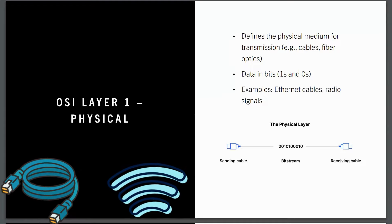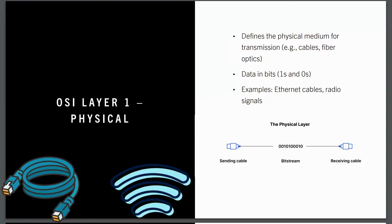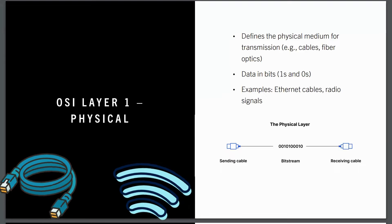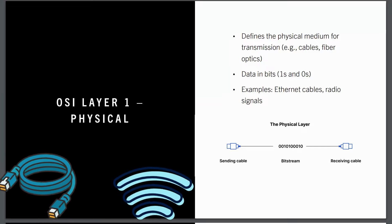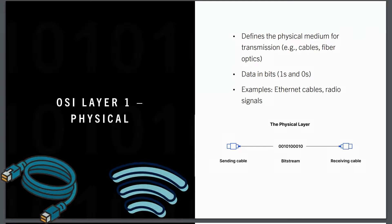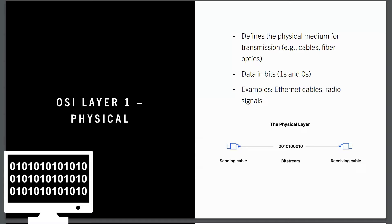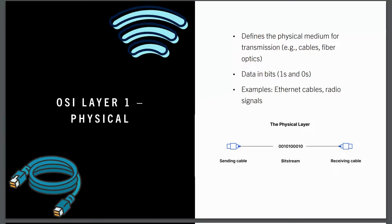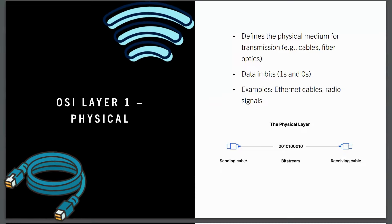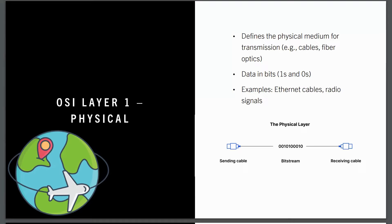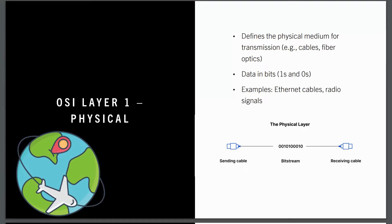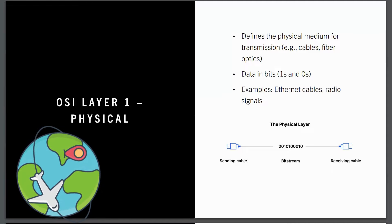OSI layer one: the physical layer. This layer is all about the actual hardware that sends data — think cables, fiber optics, or even radio signals. It's the physical connection between devices. The data being sent here is just raw ones and zeros — bits. It doesn't care about the meaning of the data; it just moves it from one place to another. Examples include ethernet cables that plug into your computer or the radio signals your phone uses to connect to Wi-Fi. This layer is essential for providing the physical pathway for data to travel — without it, no communication can happen between devices.